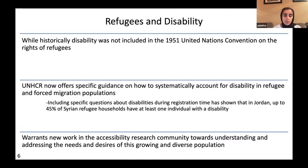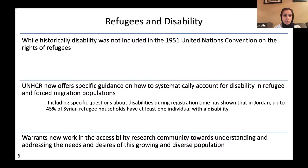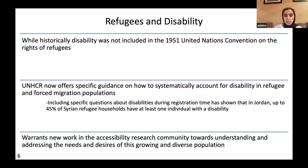Historically, the refugee population and the disability population have been seen as two separate communities, which you can see reflected in the United Nations Conventions on Refugee Rights not including disability within their definition. The UNHCR now provides specific guidance on how to systematically account for disability in refugees. These efforts have shown results — for example, including disability-specific questions during registration in Jordan resulted in 45% of Syrian refugee households reporting at least one individual with a disability. This signals a need for new work in accessibility research to address this growing and diverse population.